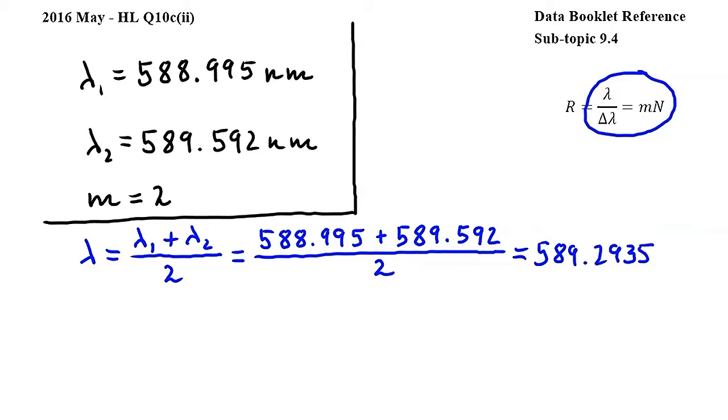Note that because of the small differences between lambda 1, lambda 2 and lambda, it is also correct to use lambda 1 or lambda 2 in place of lambda in the equation. However, here I will work with the average.